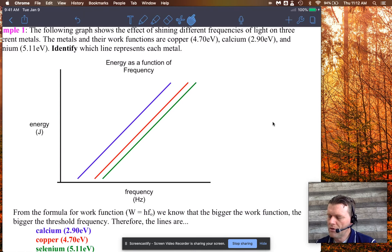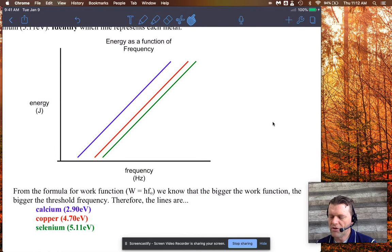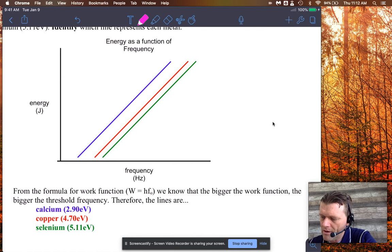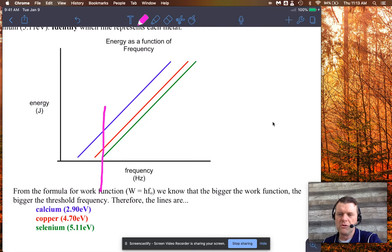So here you can see calcium is 2.9 electron volts. That's the threshold frequency. So it's going to start releasing electrons before copper and before selenium. Selenium is the toughest, if you will, of these three metals, and it won't release any electrons until you hit 5.11. There's obviously no numbers on this x-axis, but if you can see right there at that specific frequency, copper and calcium are already letting go of their electrons. They started doing that a while ago and calcium would have released them with quite high energy compared to copper at that point. But selenium is just barely starting, if that makes sense.